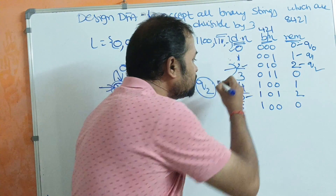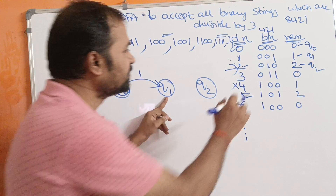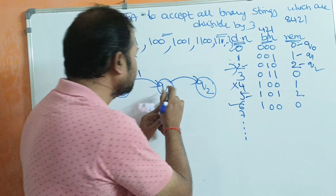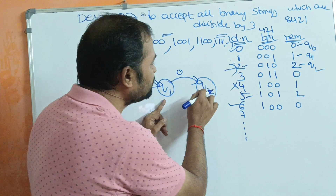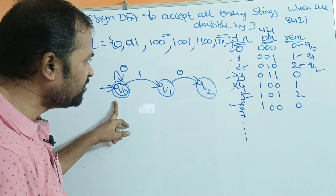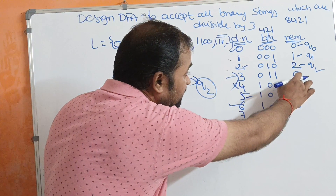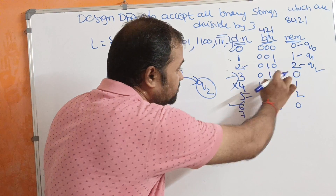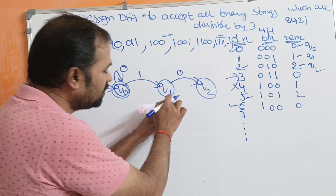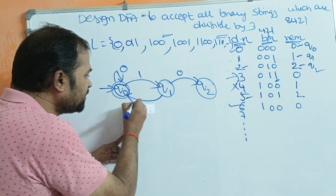Now let us focus on decimal 2, binary 010. Q0 on 0 stays at Q0; Q0 on 1 moves to Q1; Q1 on 0 moves to state Q2. Next, for decimal 3, binary 011: Q0 on 0 stays at Q0; Q0 on 1 moves to Q1; then we need to reach state Q0 (since 3 is divisible by 3, remainder is 0). So Q1 on 1 moves to state Q0.